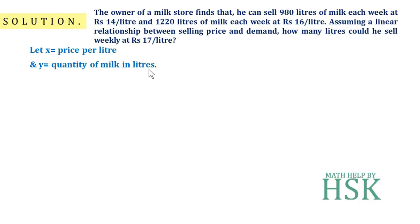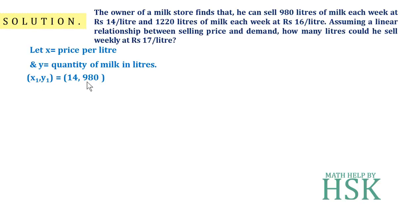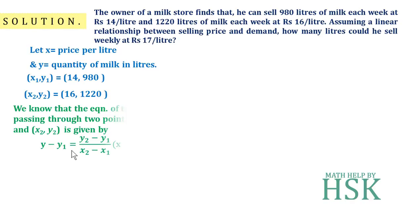Because he sells 980 liters of milk at rupees 14 per liter, we can assume that (x1, y1) = (14, 980). Since it is a linear relationship, the values of the selling price and demand give us a set of points on the line representing the linear relation. Similarly, (x2, y2) = (16, 1220) because he sells 1220 liters of milk at a rate of 16 per liter.